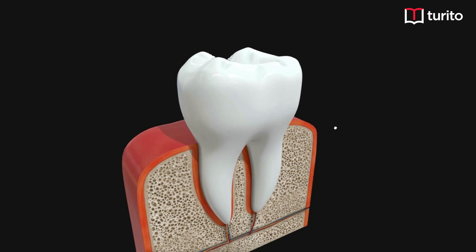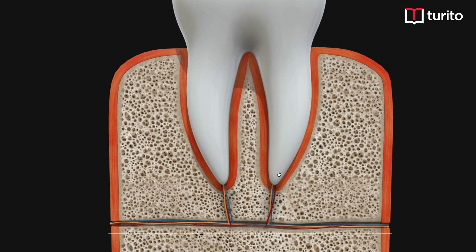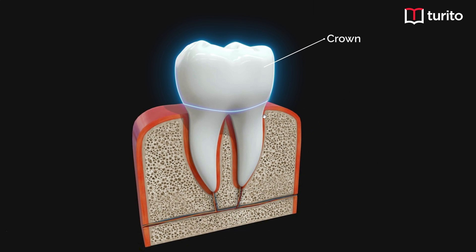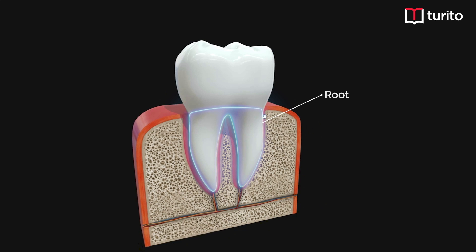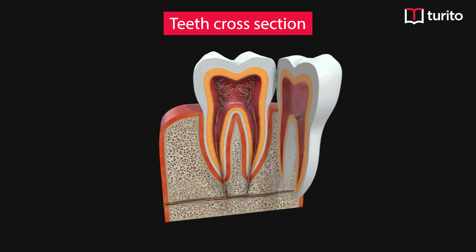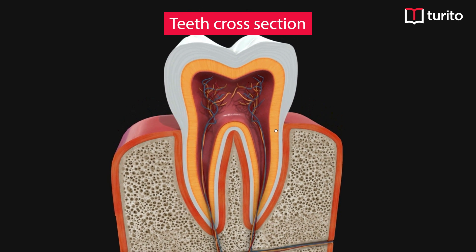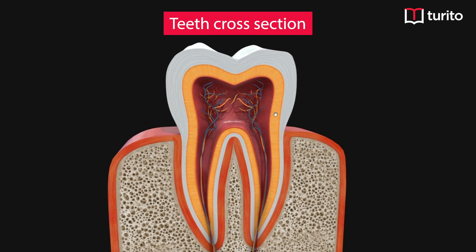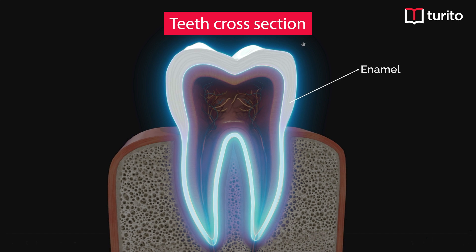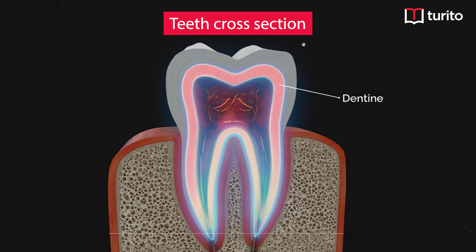Let us understand the structure of teeth. The structure is divided into three parts: the crown, the neck region, and the root region. The crown region is exposed outside, while the root is embedded inside the jaw bone. In between we have the neck region. The outer crown region has an outer layer which is the strongest part of our body, called the enamel, made of calcium phosphate. Enamel is secreted by ameloblast cells, which are ectodermal in origin, and is responsible for mastication of food.